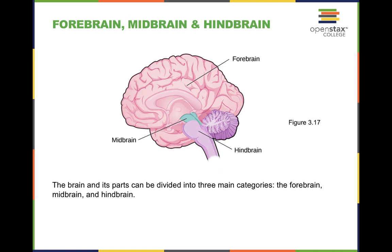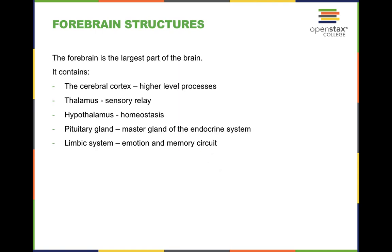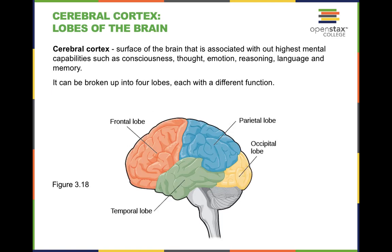There are three categories of the brain overall: the midbrain, the forebrain, and the hindbrain. We're going to dive into each one and specifically look at the four lobes of the brain. Some other structures we'll go over include the cerebral cortex, the thalamus, the hypothalamus, the pituitary gland, as well as the limbic system.